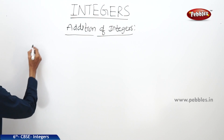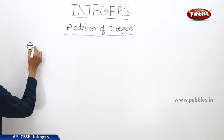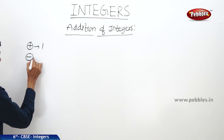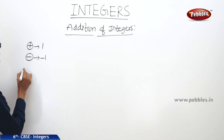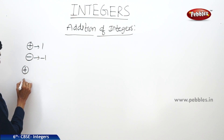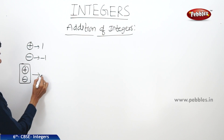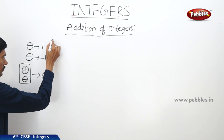Now for this, let us assume that a plus sign symbol represents integer positive 1, and a minus symbol represents integer minus 1. A plus and minus together represent 0. Now let us add two positive integers.